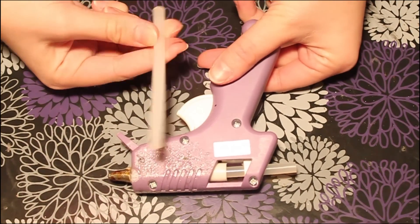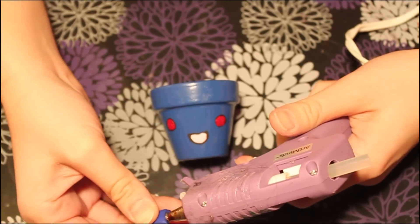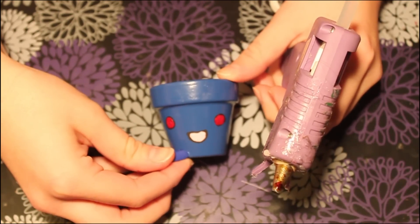Then go ahead and grab your glue gun and your glue stick, add a little hot glue to the foot, and add it to the bottom of the Oddish pot.